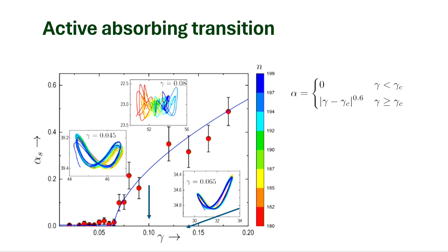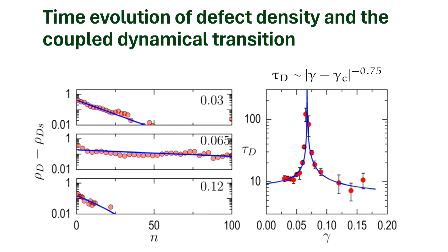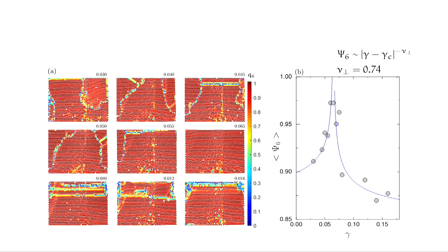You can measure the absorbing-state fraction fs as a function of gamma. Below a critical point, everything is absorbing - the fraction of active particles is zero. Once you cross it, it becomes active. These correspond to the loop structures: tight loops in the absorbing state, very diffusive behavior above. You can also measure defect density as a function of n; it comes down with a power-law character near gamma-c. The Psi-6 parameter also has a peak there.